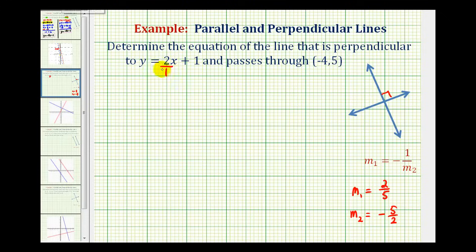Therefore, the slope of the perpendicular line would be the negative reciprocal of this. So for the slope of our line, we'll have to flip this over and change the sign. That would give us negative 1 half. Negative 1 half is the negative reciprocal of 2 over 1. And we know our line also passes through the point negative 4, 5.